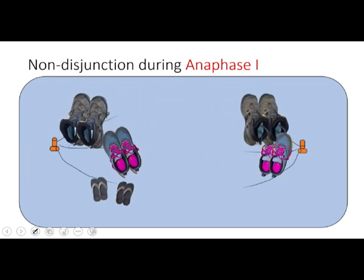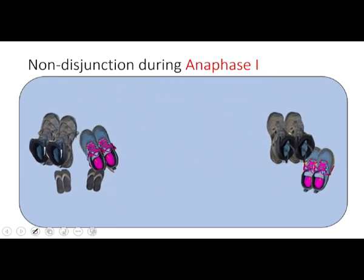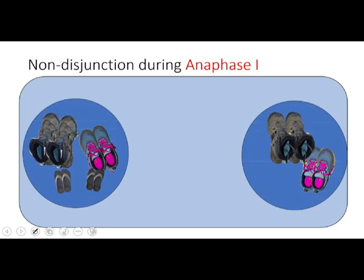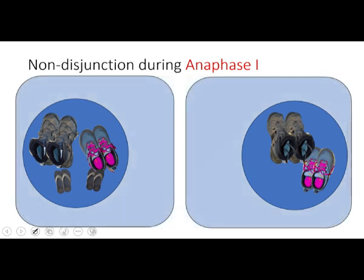What if they don't? What if they pull apart unevenly? When we divide these up, we get an extra pair of chromosomes on one side. If we divide this again, the gametes on one side are going to have four chromosomes and on the other side only two. We're supposed to have three — no questions asked, you have to have three. That needs to be fertilized by another cell with three chromosomes.